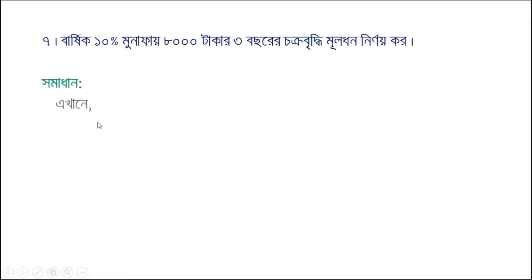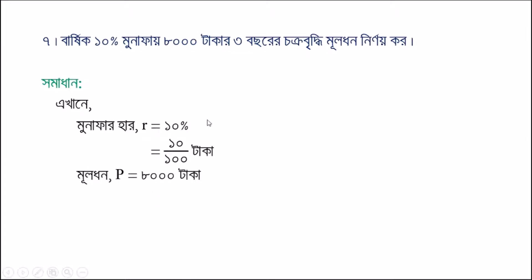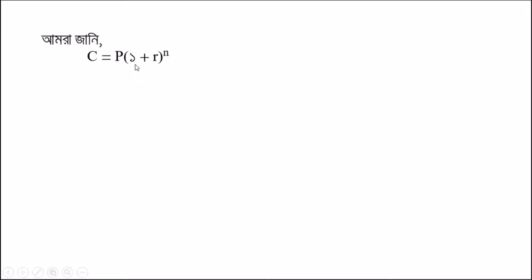The amount of money is equal to the principal. We use the simple compound interest formula: C is equal to P times (1 plus R) to the power N. Here, P is equal to 8, and R is 1, plus R is 10 divided by x.